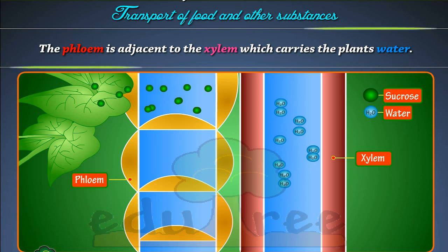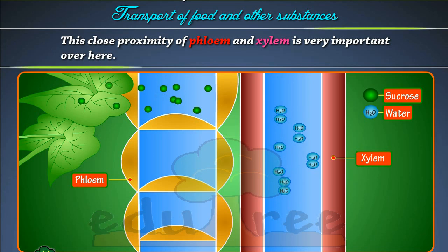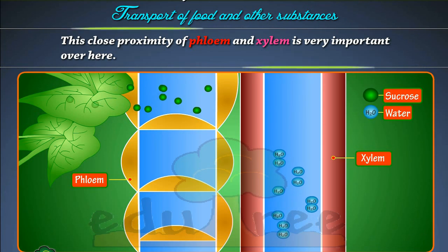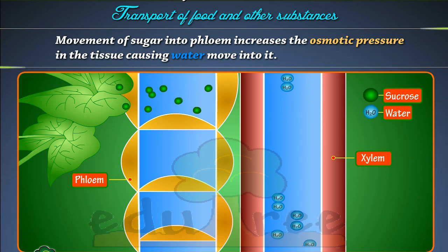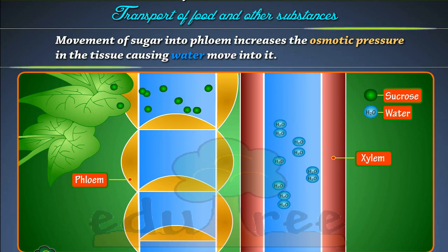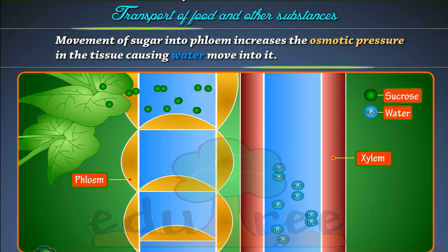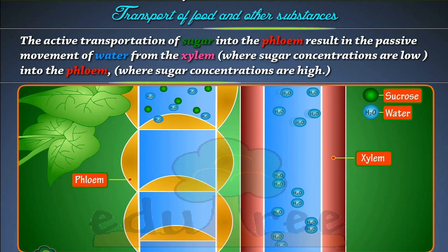the plant's water. This close proximity of phloem and xylem is very important. Movement of sugar into phloem increases the osmotic pressure in the tissue, causing water to move into it. The active transportation of sugar into the phloem